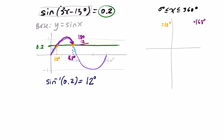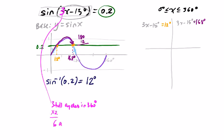We will need to set the original angle for this equation equal to that. 3x minus 15 equals both those base answers. Before we move on, let's just check how many answers we are expecting. If this number in front of x is 3, this means we have three full cycles in 360 degrees. Each full cycle gives us two answers. That means we are going to have a total of six answers.